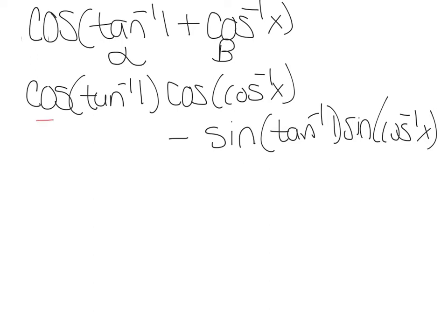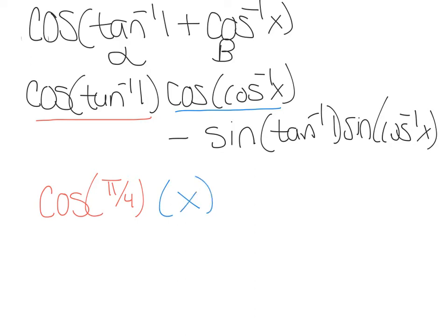We're going to do this piece by piece. This first piece: arctan of 1 — well, tangent equals 1 at π/4, so what I really have is cosine of π/4. This next piece: cosine and arccos undo each other — they're inverses — so you just get x.